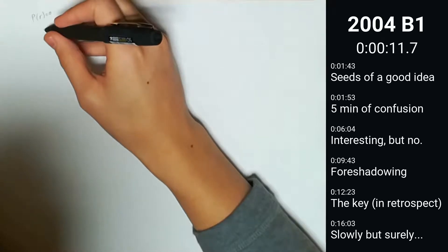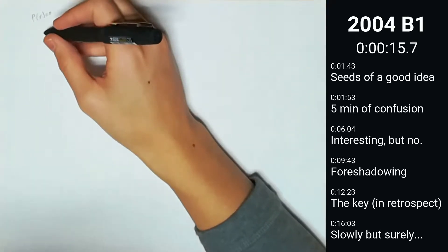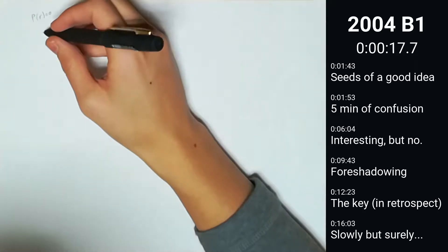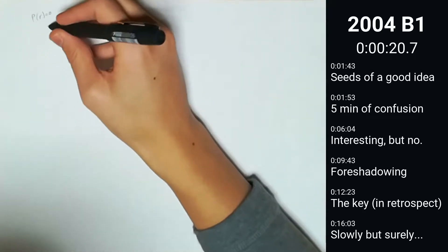They want to show that the n numbers are integers. The last one is clearly an integer — it's just the polynomial — so that one's done.